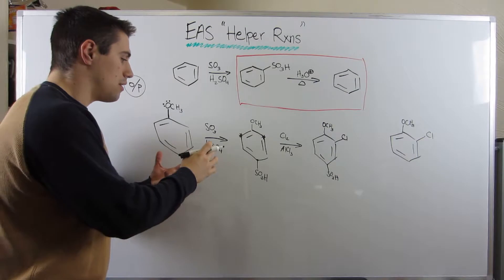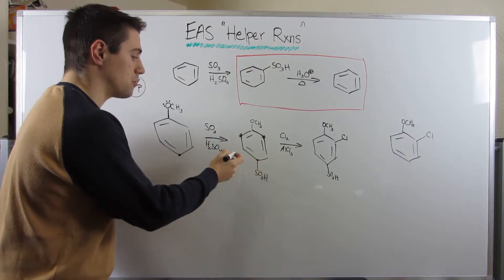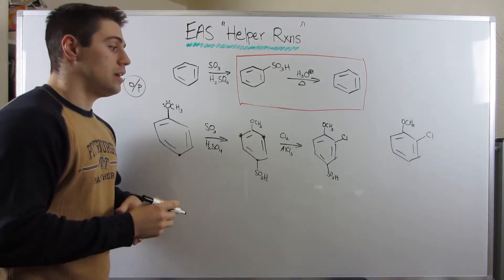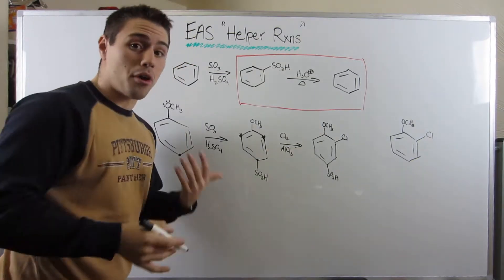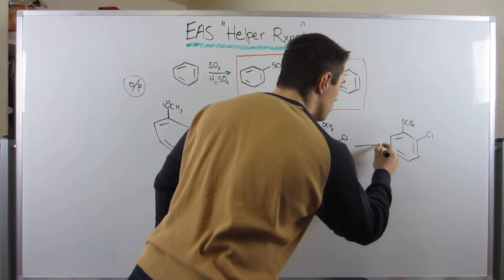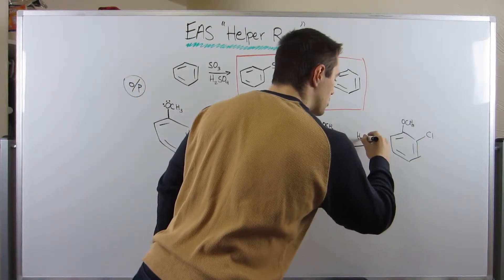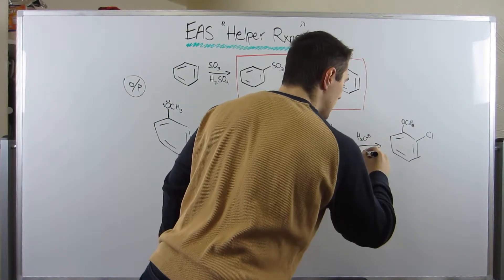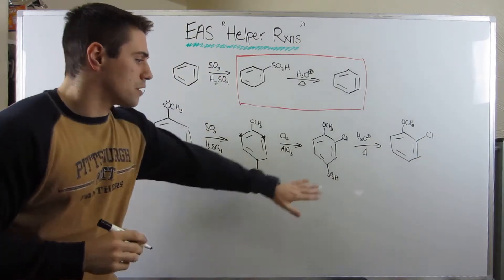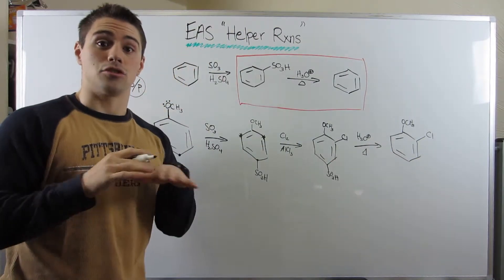So you can see how we've occupied that para position with our sulfonyl blocking group. And the best part is, we clearly don't want him in the product. So all we have to do is use our reaction that we just learned. If we throw in some H3O+ and some heat, that sulfonyl group wiped away and is good as gone.